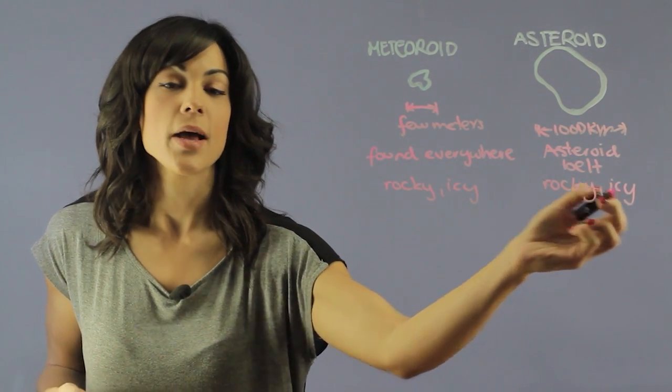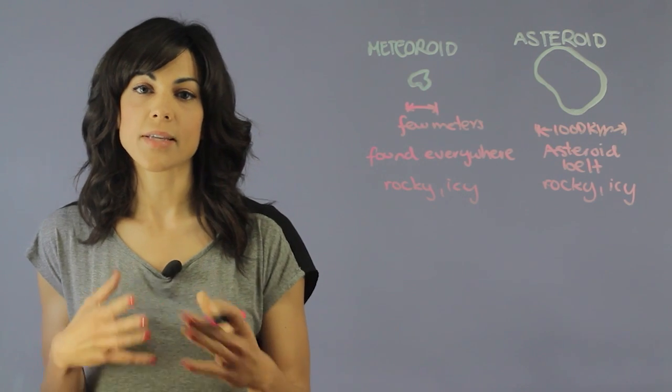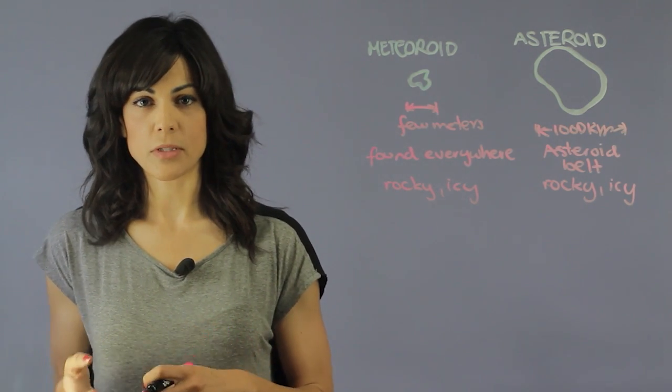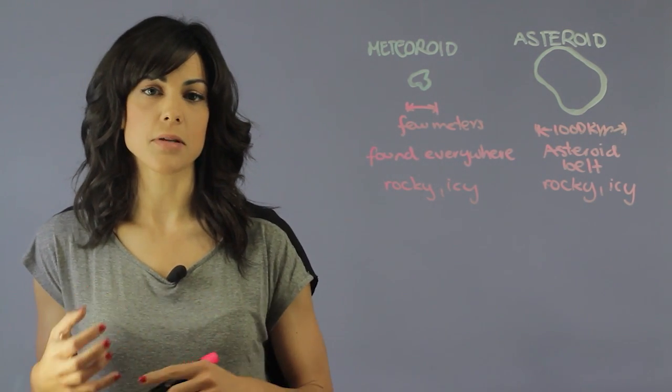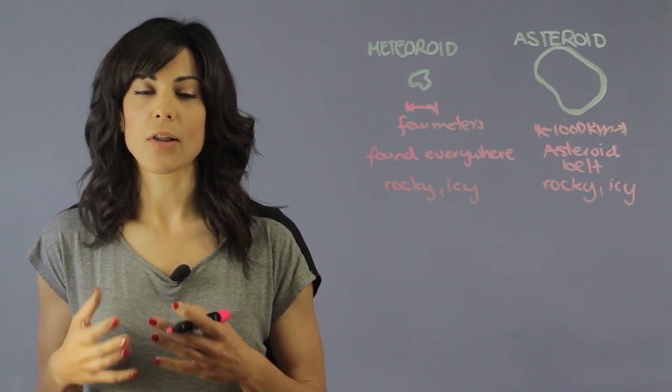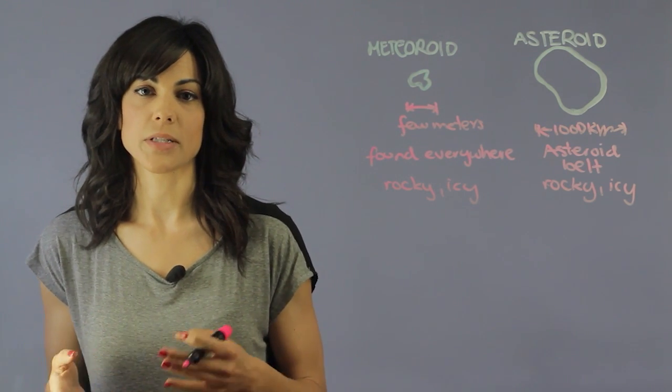But because they don't have any specific origin, they tend to vary a lot in the chemical composition. We have found diamonds, we have found methane. You can find a lot of very exotic things in meteoroids and asteroids.